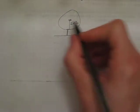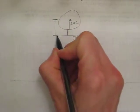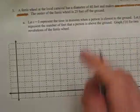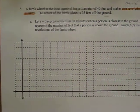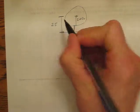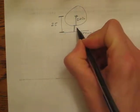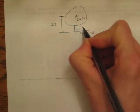But it also said that the center of the ferris wheel to the ground was 25 feet off the ground. So the center of the ferris wheel is 25 feet off the ground, and the radius is 20. So since this distance is 25 and this distance is 20, this distance has to be 5 feet.